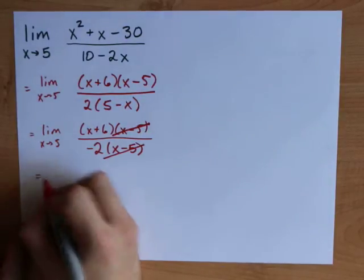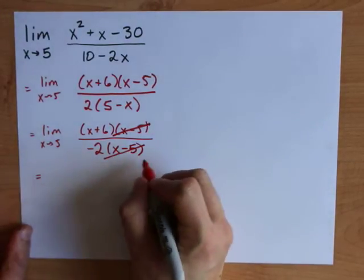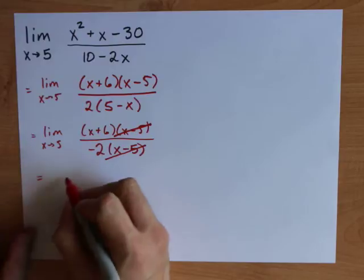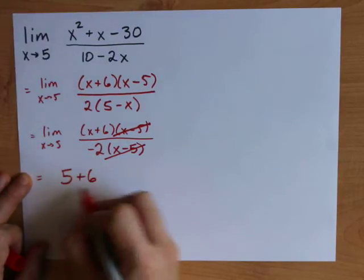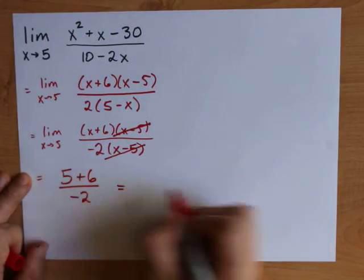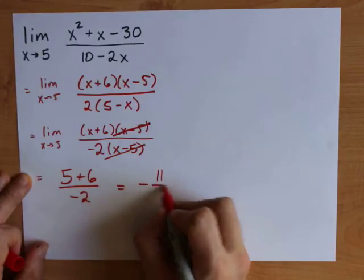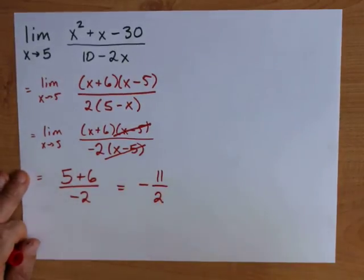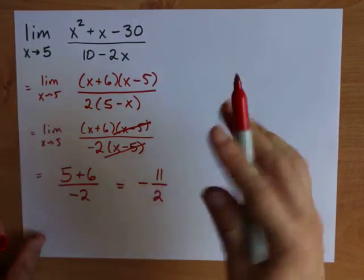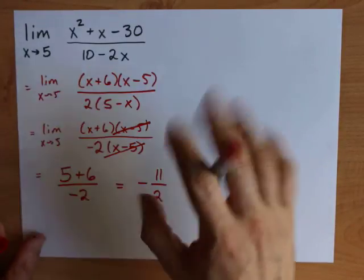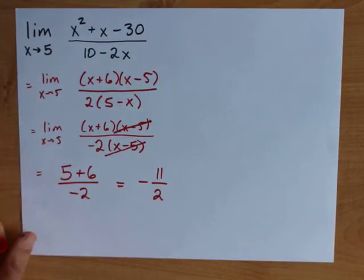Anyways, now that I don't have an x minus 5 in the denominator, I can plug 5 in. I get 5 plus 6 over negative 2. Apparently this limit is negative 11 halves, or 5.5. Pretty easy. Factor, cancel, and plug. Bada boom bada bing. Best of luck.